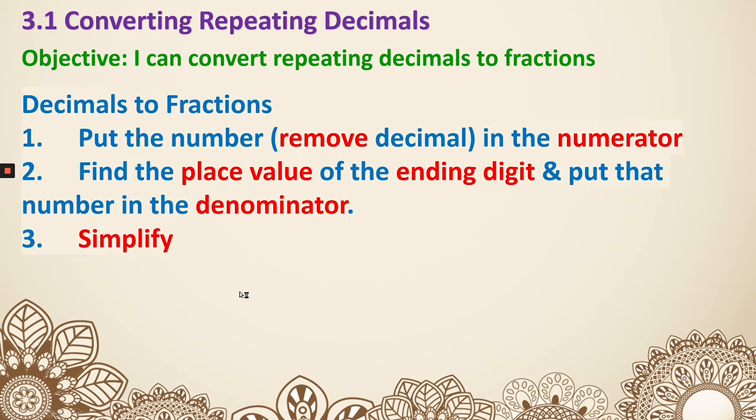Next, let's talk about how we can change from decimal to fraction. Here are the steps: Put the number, remove the decimal, in the numerator. Then find the place value of the ending digit and put that number in the denominator. This time, since it's not repeating, we are not going to subtract that 1. We're just going to use the place value.